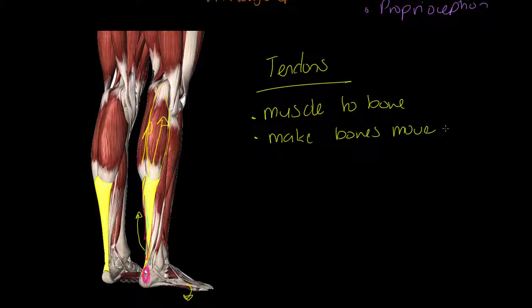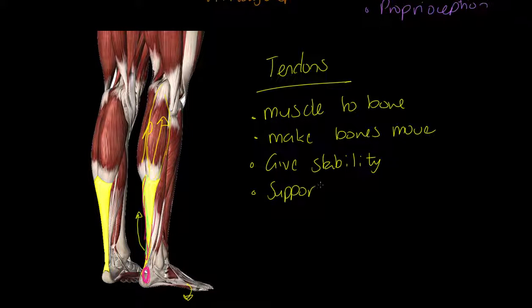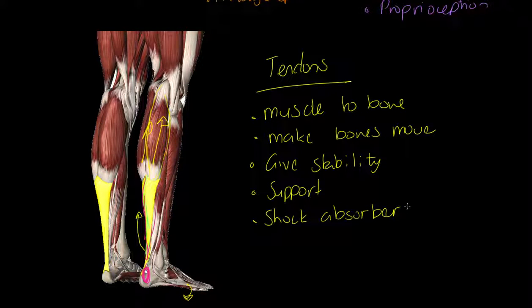Tendons also give stability. Think about a muscle connecting directly to a bone, it's a fleshy soft tissue connected to a really hard tissue, so this is that kind of interim structure. It helps to be lots of stability there. They're also supportive structures, and finally they act as shock absorbers, especially when a muscle lengthens under tension, much more of which in other lessons or other courses.